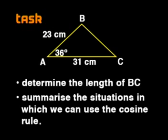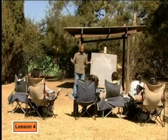To end the lesson today, I would like you to try the following tasks. Question 1: Find the length of BC in triangle ABC if AB is 23 cm, AC is 31 cm, and angle A is 36 degrees. Question 2: Summarise the situations in which we can use the cosine rule. Okay guys, that's it for today. Now I'm ready for some action!